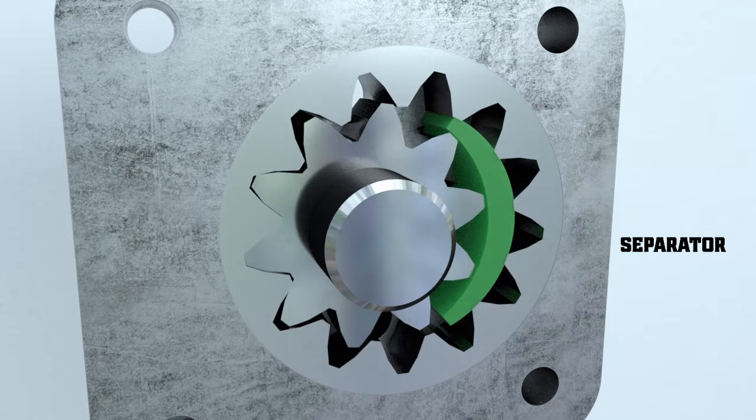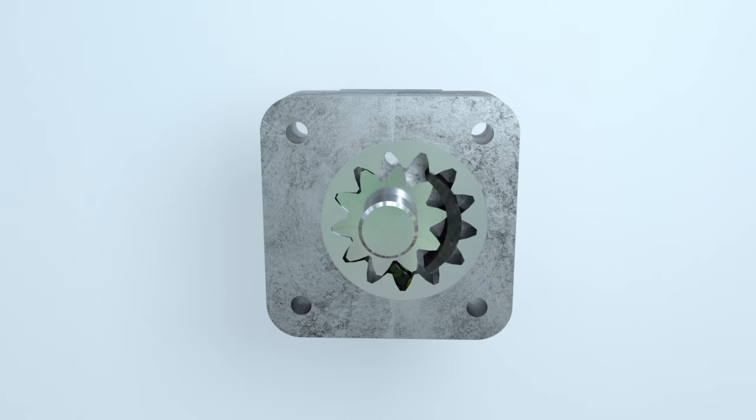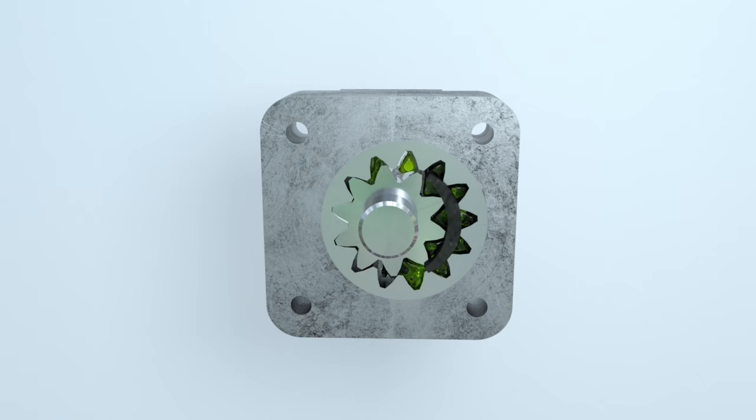As the gear teeth rotate farther, the fluid is delivered to the area where the gear teeth go into the mesh. From there it will be forced into the discharge channel.